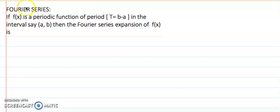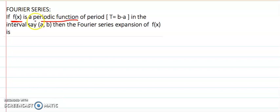In this lecture, I am going to share the Fourier series of a periodic function. Before talking about specific intervals, let's first learn the general process to write a Fourier series. The first requirement is that the function f(x) must be periodic, otherwise we cannot express it as a Fourier series. The interval, here given as a to b, must also be provided.